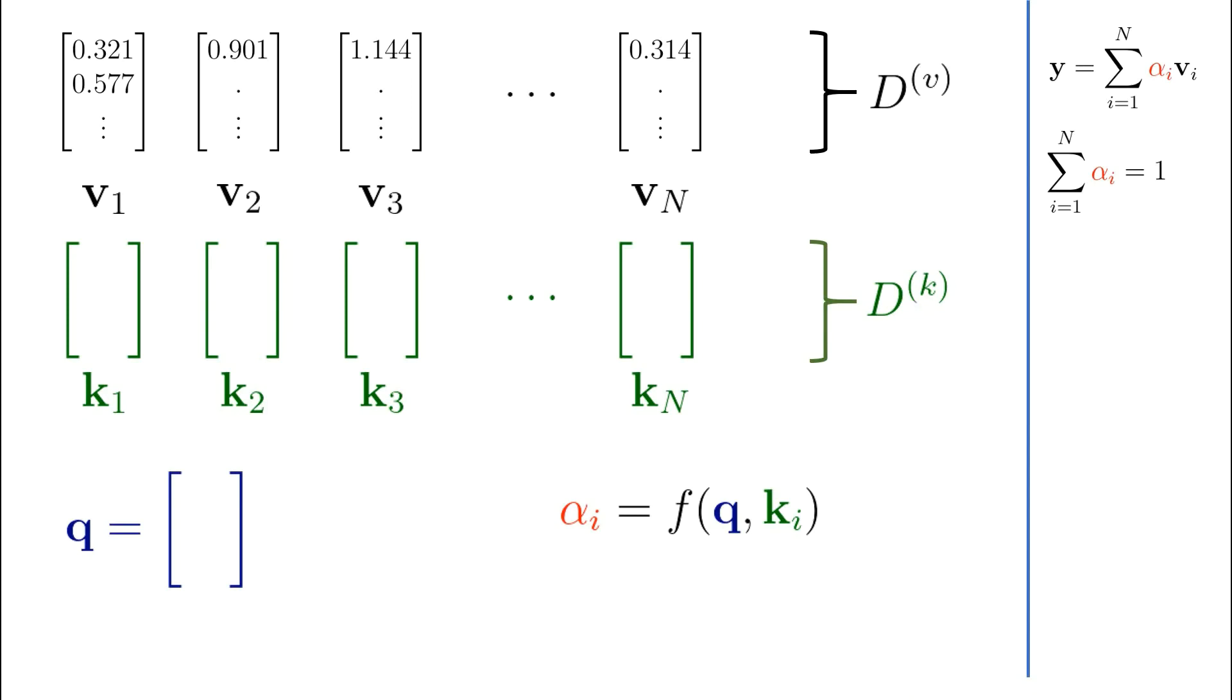As an example, a popular example is dot product attention, where we simply perform the dot product between the key and the query, apply a non-linearity, often the hyperbolic tan function, and then apply the softmax function to ensure the alphas are still normalized and sum to one.